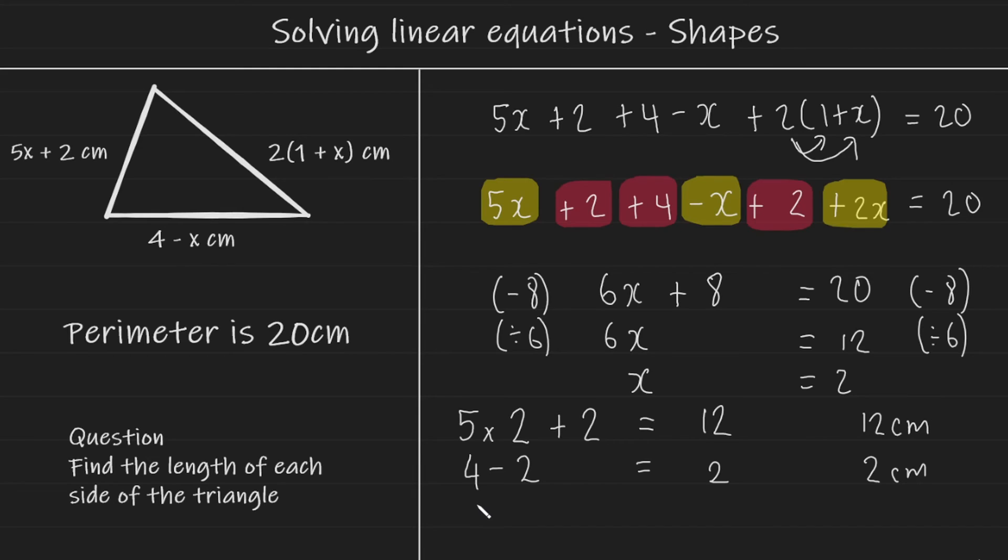And if we do this with the right hand side of the triangle, it's going to be 2 multiplied by 1 plus 2, which is going to give us 6, 6 centimeters. And if we add these three sides together, 12 plus 2 plus 6, we get 20 centimeters, which is the perimeter of the triangle.